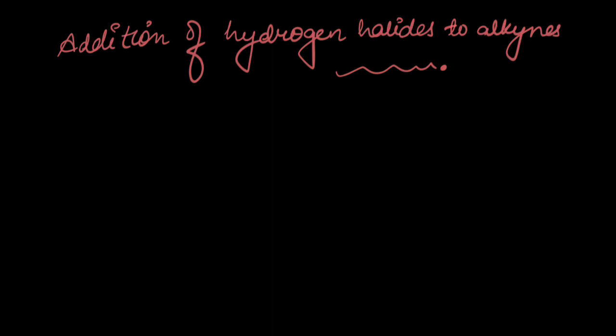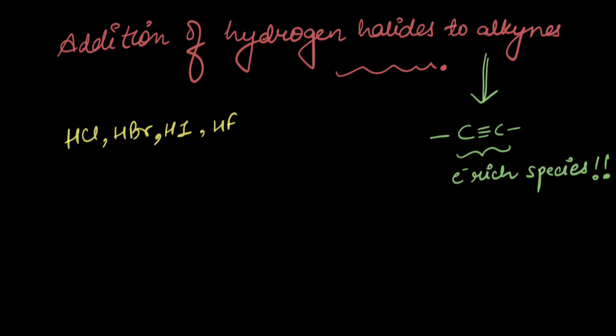So let's check out what happens when we add the hydrogen halides like HBr, HCl, HF, etc. to a given alkyne. What do we know about alkynes? Well, alkynes are electron rich species, there's a pi electron cloud that's there. So what would happen if this alkyne, acetylene or ethyne, is reacted with HBr? Let's find out.